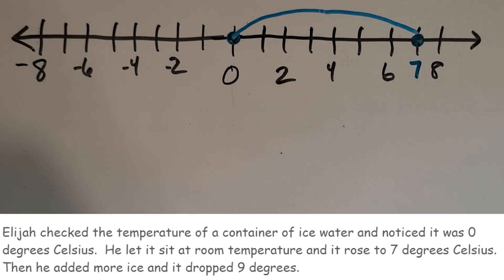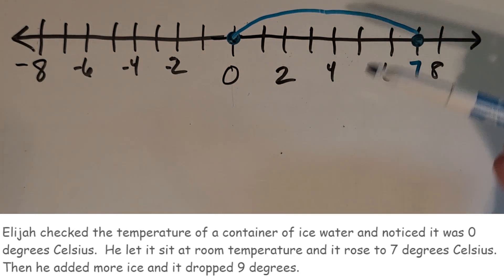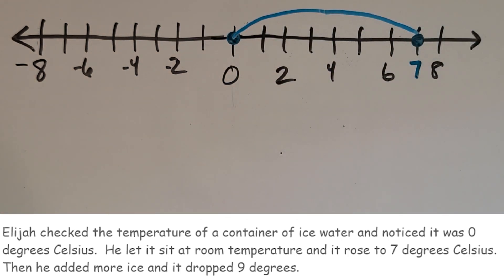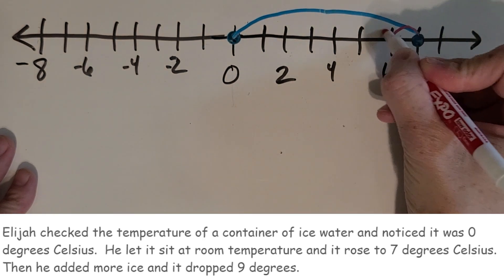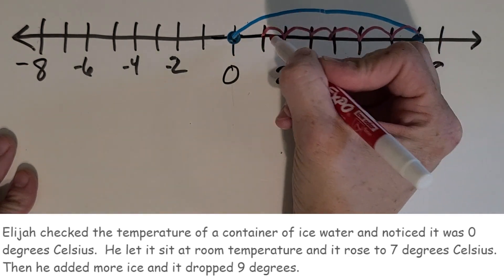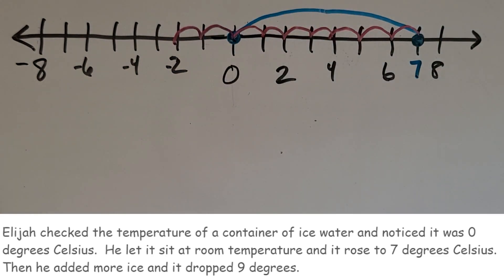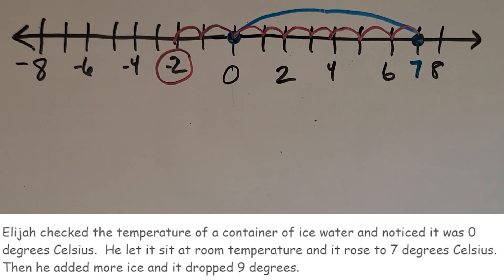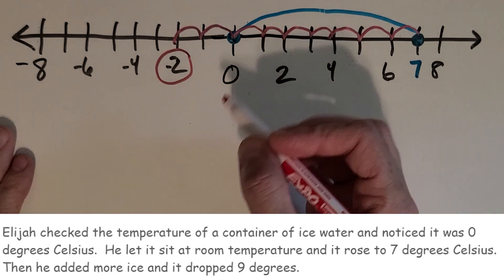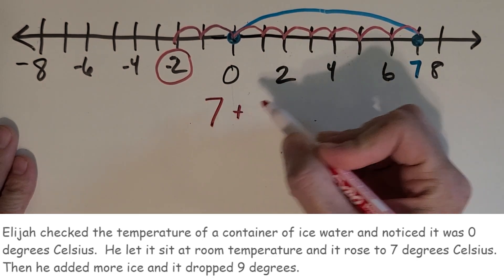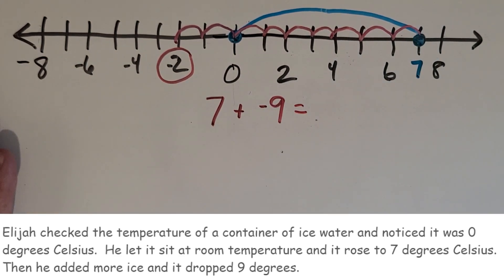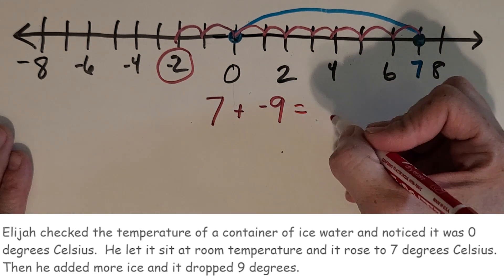Then he added some ice and it dropped nine degrees. We're going to go this way on the number line nine degrees: one, two, three, four, five, six, seven, eight, nine jumps. The temperature dropping nine degrees, we landed here at negative two. So that is the temperature of the water. If we wanted to write that out as an addition problem: seven degrees plus a negative nine equals negative two.